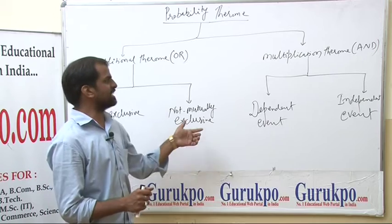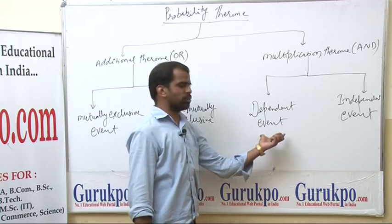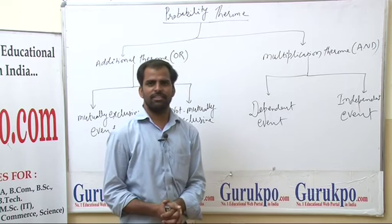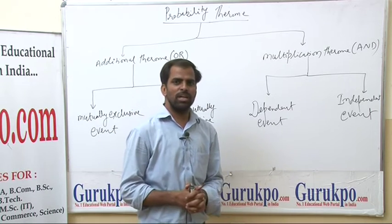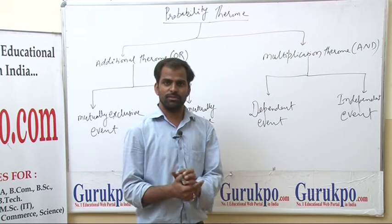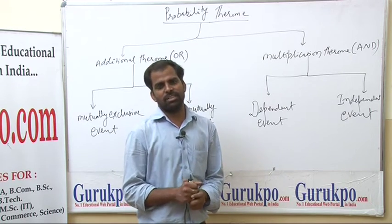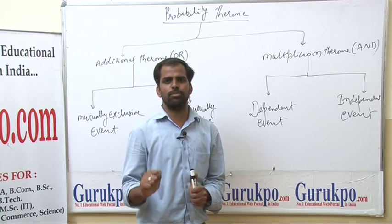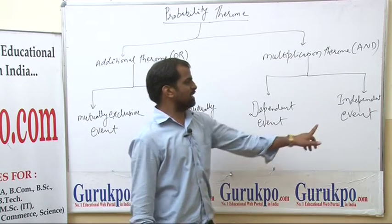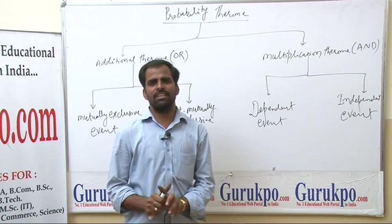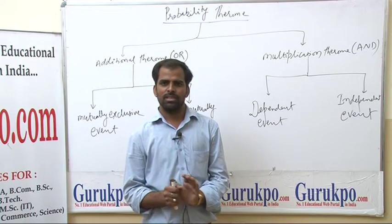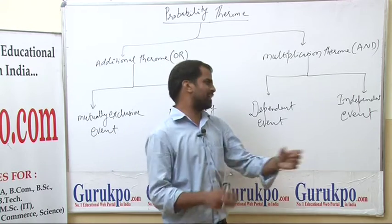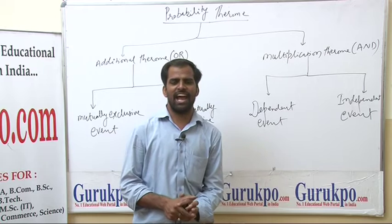Multiplication theorem is divided into two parts: dependent events and independent events. Dependent events: jab events is tarike se hon ki ek event ke hone ke baad doosri event ho, to dono events dependent kehlaengi. That is, for independent events, the first event occurs and thereafter another event occurs independently without affecting each other.